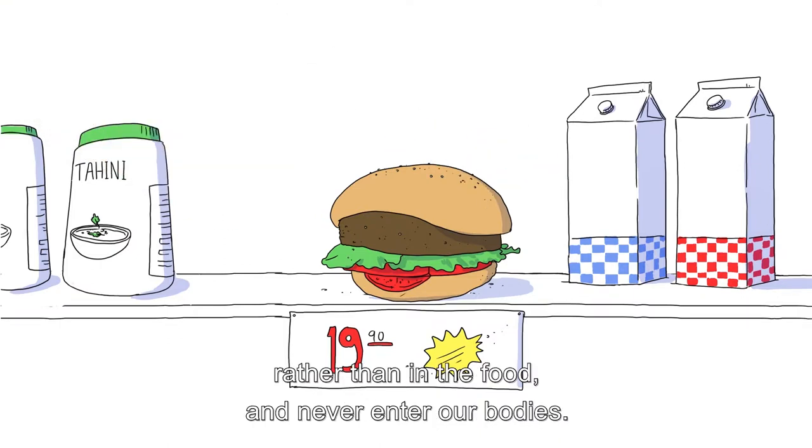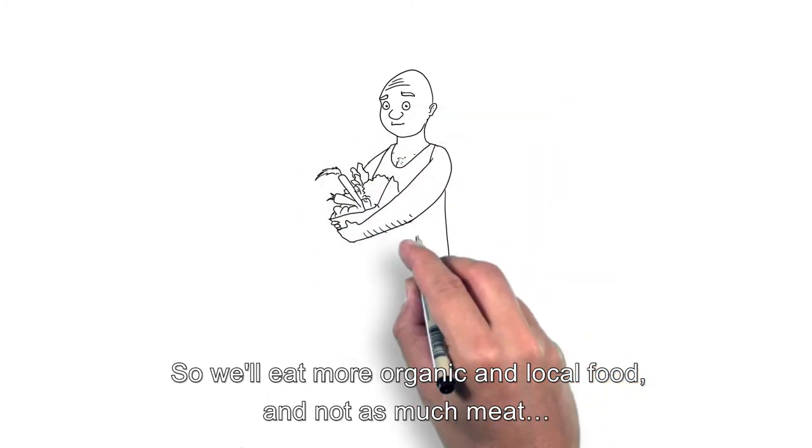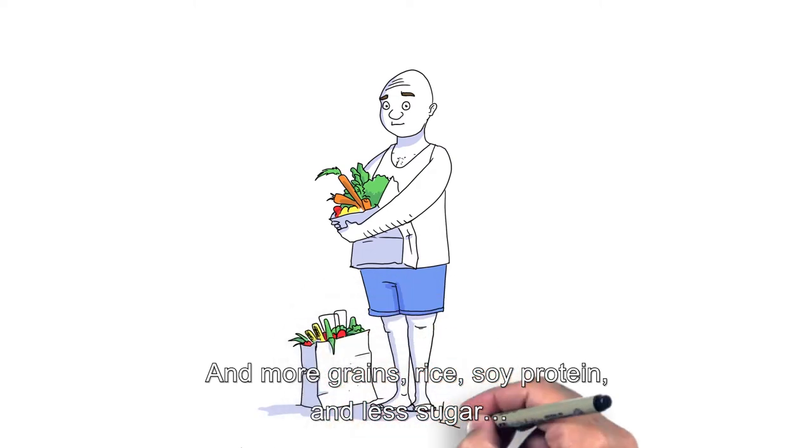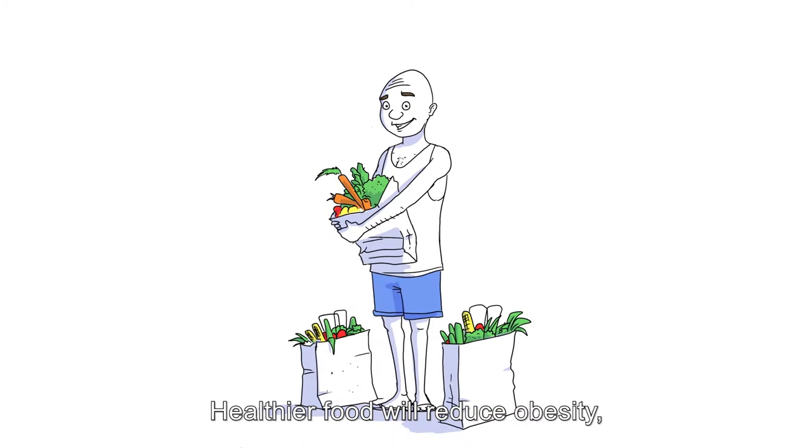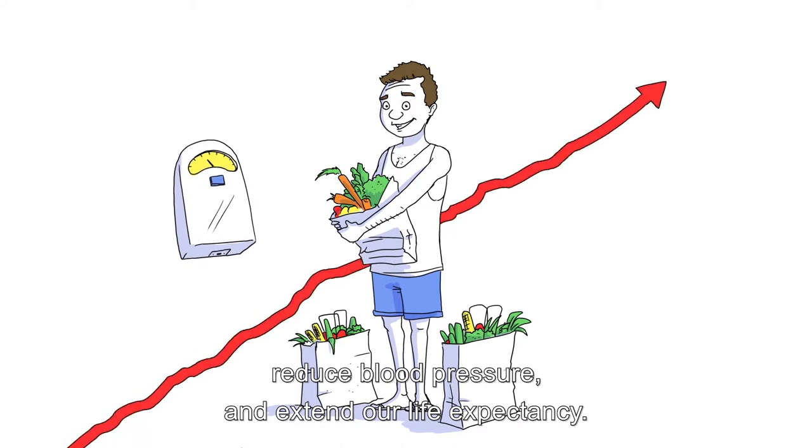So we'll eat more organic and local food, and not as much meat? And more grains, rice, soy protein, and less sugar. So we won't get so fat? Absolutely. Healthier food will reduce obesity, delay the onset of diseases, reduce blood pressure, and extend our life expectancy.